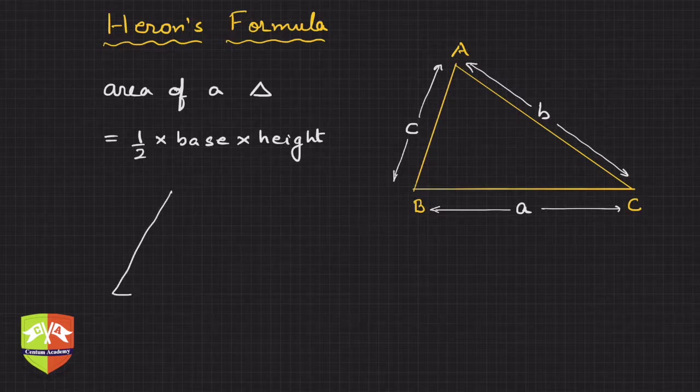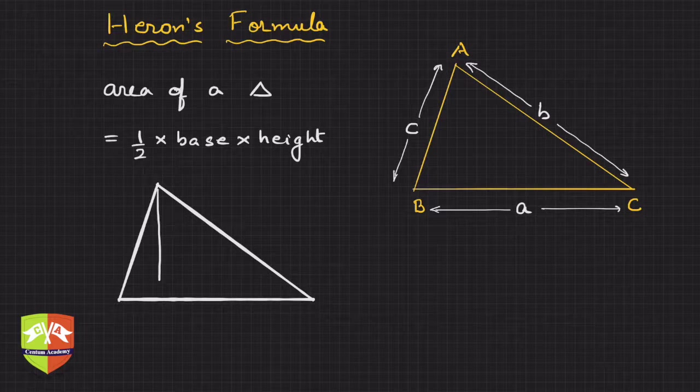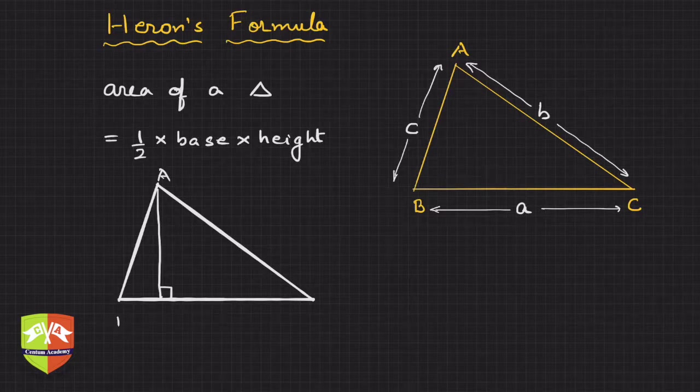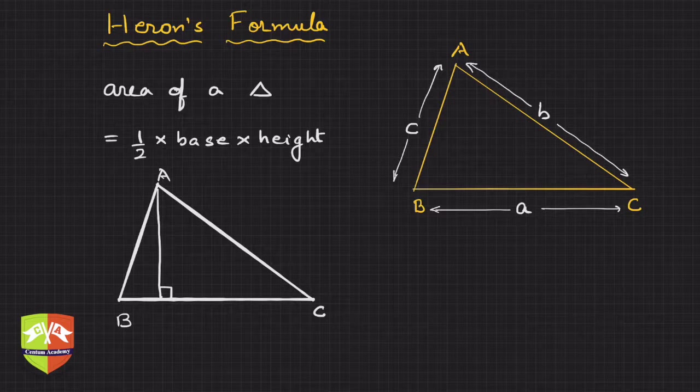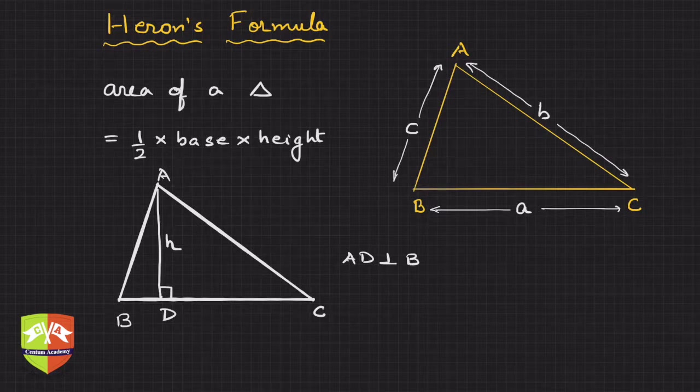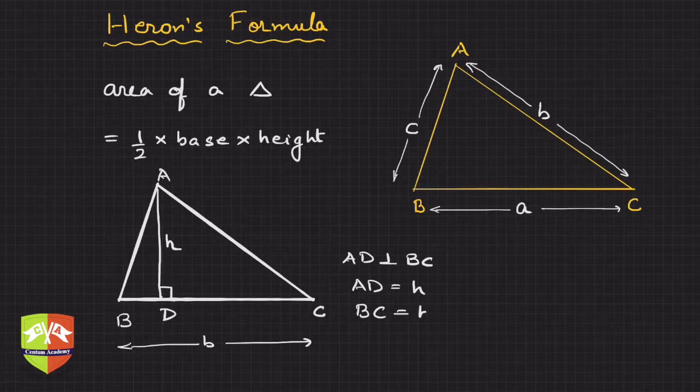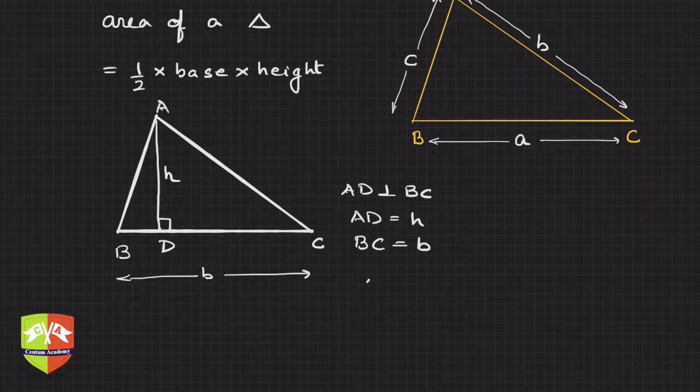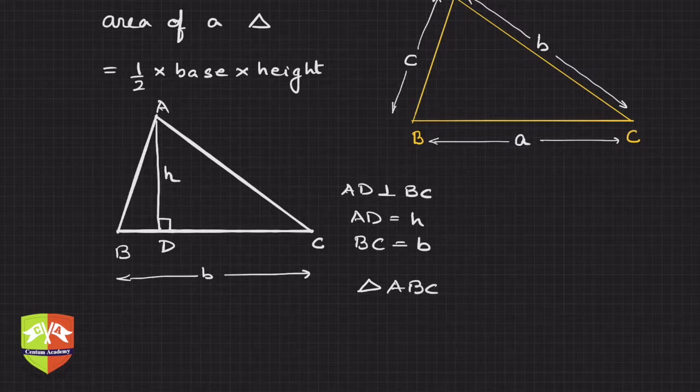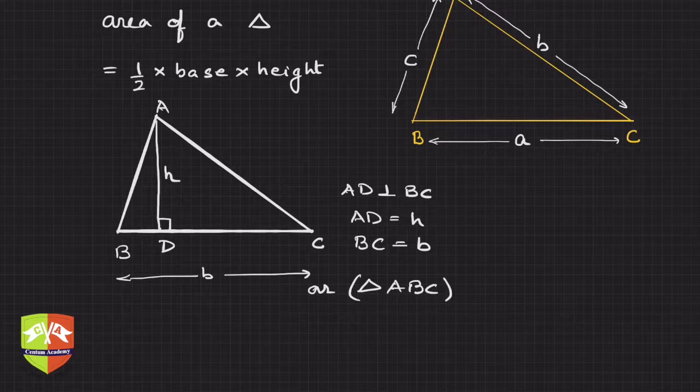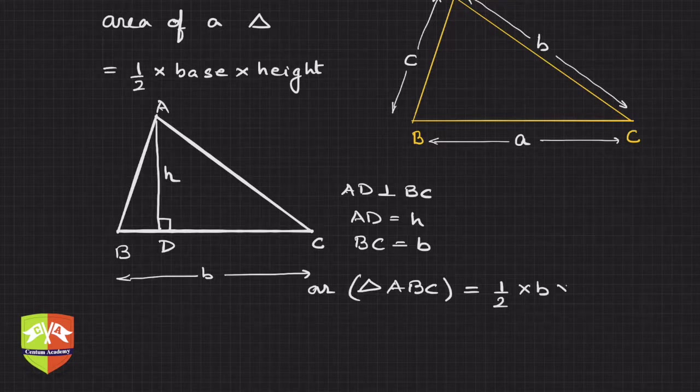This formula you have been using for a while. It means that if there is a triangle given, then if you drop a perpendicular, which is also called an altitude from any of the vertices - let's say this triangle is A, B, C, and this side is H, AD - AD is perpendicular to BC and AD equals H, and BC length is b. Then area of triangle ABC is equal to half into b into H.